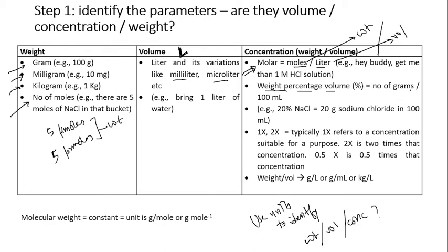The second kind of concentration you will encounter is weight percentage by volume. It is the number of grams in 100 ml. For example, 20% NaCl means 20 grams of sodium chloride in 100 ml of solution — not water, but solution.